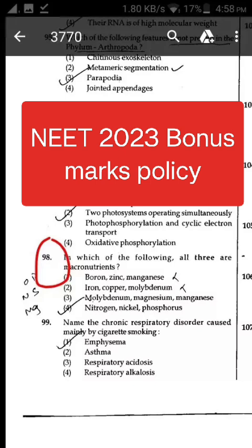If all options are found to be correct, then four marks (+4) will be awarded to all those who have attempted the question. If a question is found to be incorrect or the question is dropped, then four marks (+4) will be awarded to all those who have attempted the question.